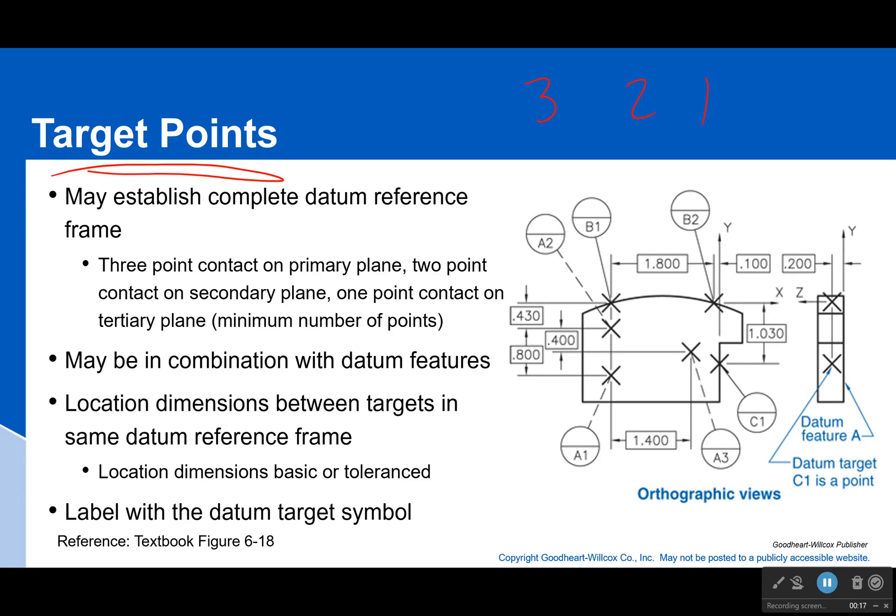However, how many do you need for each datum? Well, if it's the primary plane you're going to need three points. If it is the secondary plane you're going to need two points, and if it's the tertiary plane you're going to need one point. So if your datum reference frame you have something that looks like this, well then you would need three for this, two for this one, and one for this one to actually establish it.